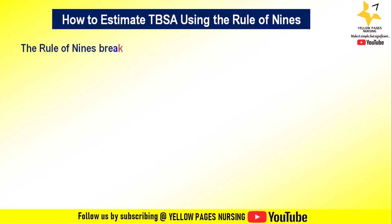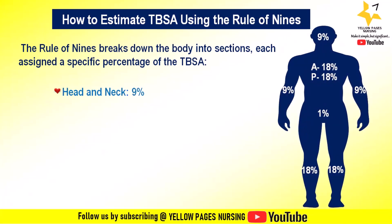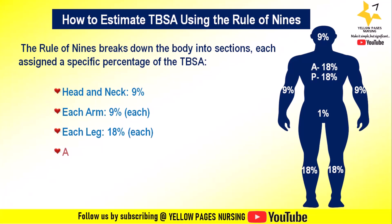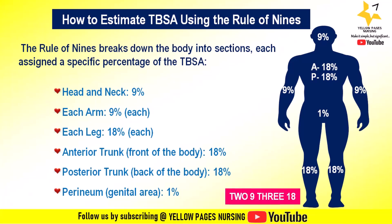The Rule of Nines breaks down the body into sections, each assigned a specific percentage of the total body surface area: head and neck — 9%, each arm — 9%, each leg — 18%, anterior trunk (front of the body) — 18%, posterior trunk (back of the body) — 18%, and perineum (genital area) — 1%. Note that a patient's palm is approximately 1% TBSA and can be used for estimating patchy areas. A useful memory aid is: two nines and three eighteens.